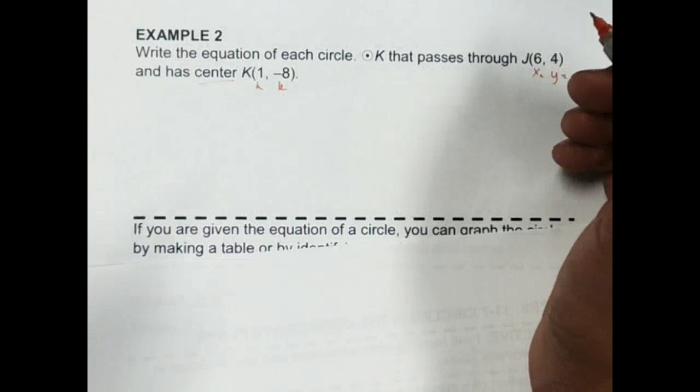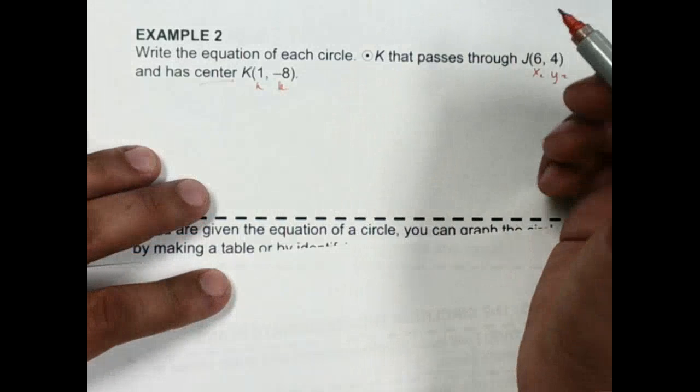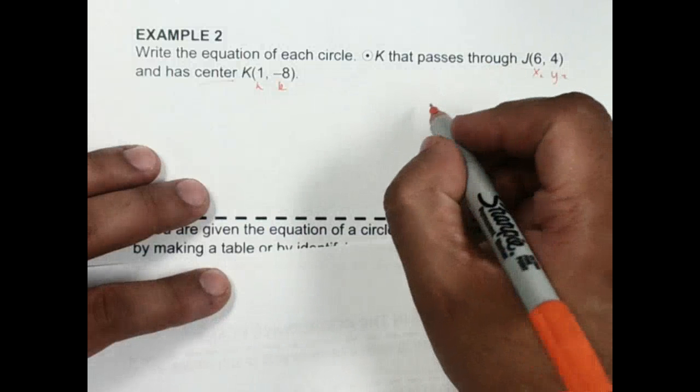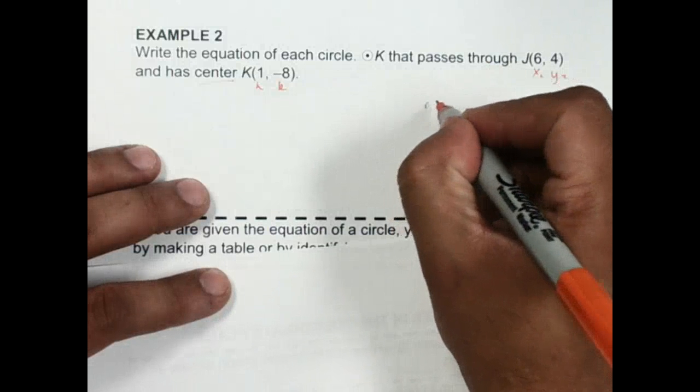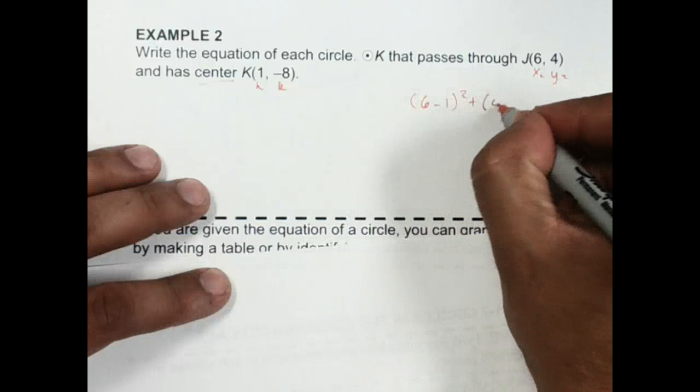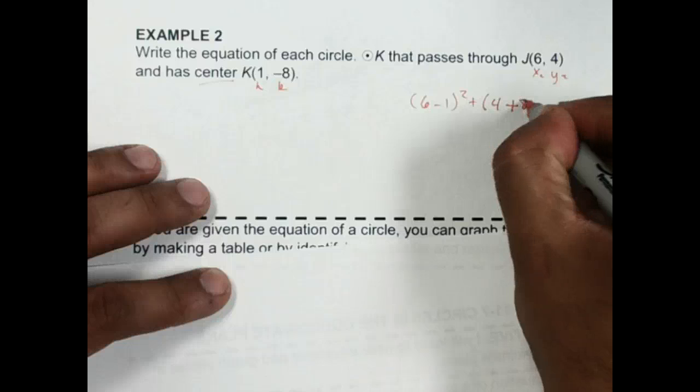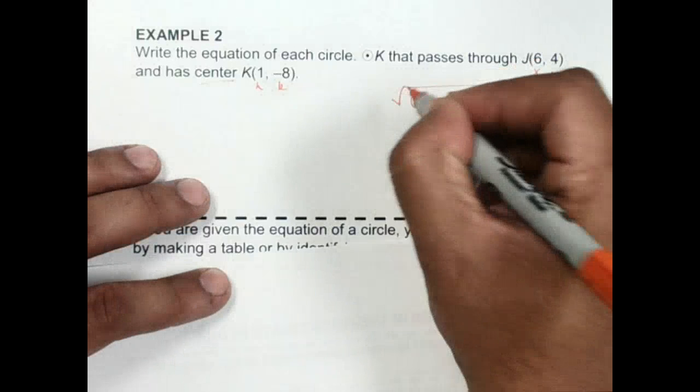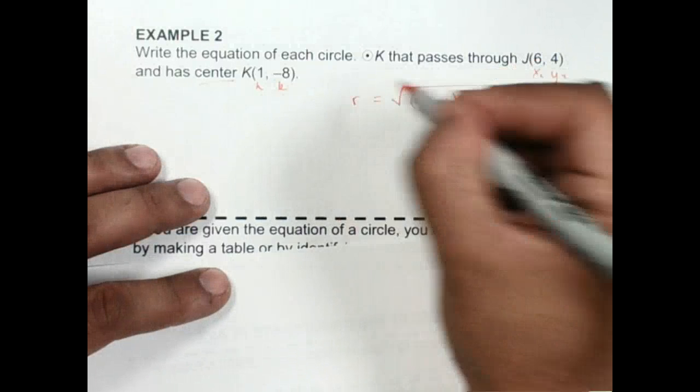But first, we need to figure out what that distance is so we know what the radius is. So we've got to go into the formula, and we're going to go 6 - 1 squared plus 4 - (-8) squared. And all of that is in the square root so that we can find r, the radius.